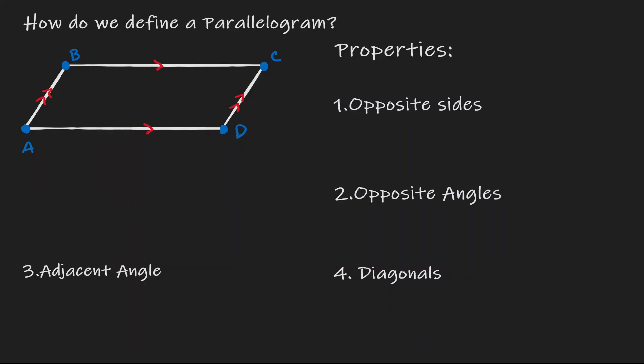If that is the case, then there are certain properties that come with it. The property for opposite sides is that opposite sides are congruent. So we can say that line segment BC is congruent to AD, and line segment AB is congruent to DC.